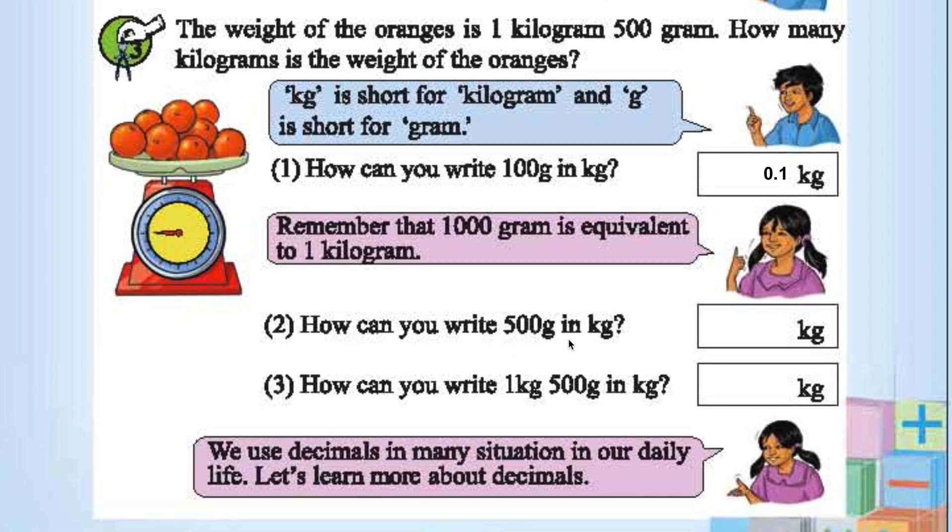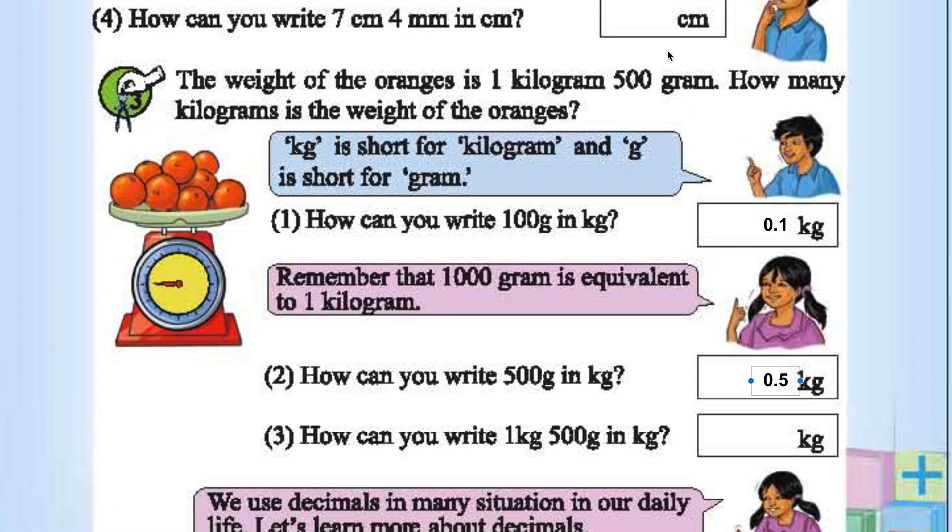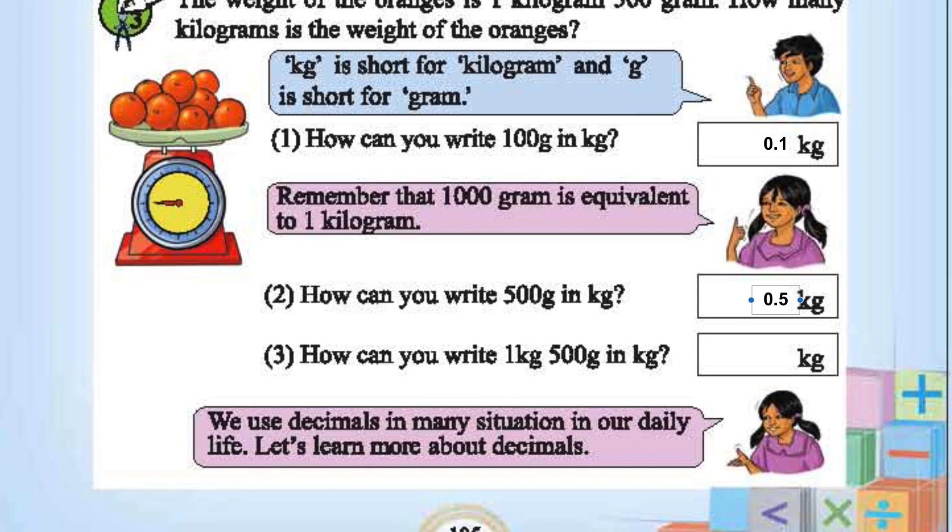How can you write 500 grams in kg? 5 into 0.1 or 5 by 10 or 500 by 1000. Whatever it may be, we will get 0.5 kg. How can you write 1 kg plus 500 grams in kg? 1.5 kg. So the answer is 1.5 kg.